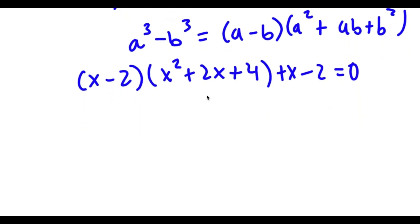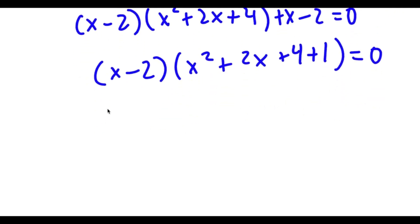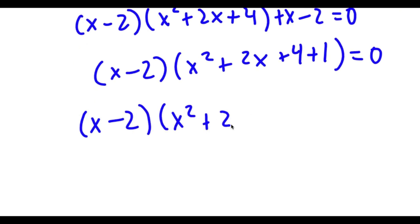Now if I factor out x minus 2, I get x minus 2 times x squared plus 2x plus 4 plus 1 is equal to 0, which is the same thing as x minus 2 times x squared plus 2x plus 5 is equal to 0.